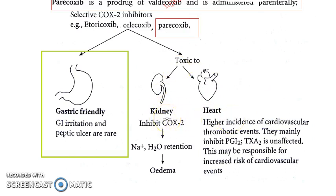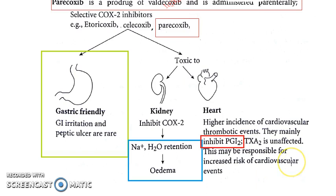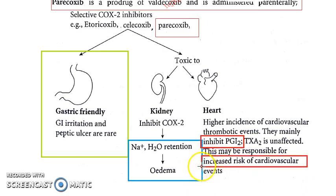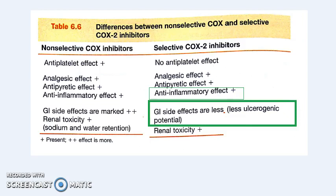Regarding the kidney: COX-2 is inhibited, leading to sodium and water retention which can cause edema. For the heart: when prostacyclin is affected, blood is not able to flow properly, so there is an increased risk of cardiovascular events. Compared to non-selective COX inhibitors, selective COX-2 inhibitors have less GI side effects and less ulcerogenic effect.